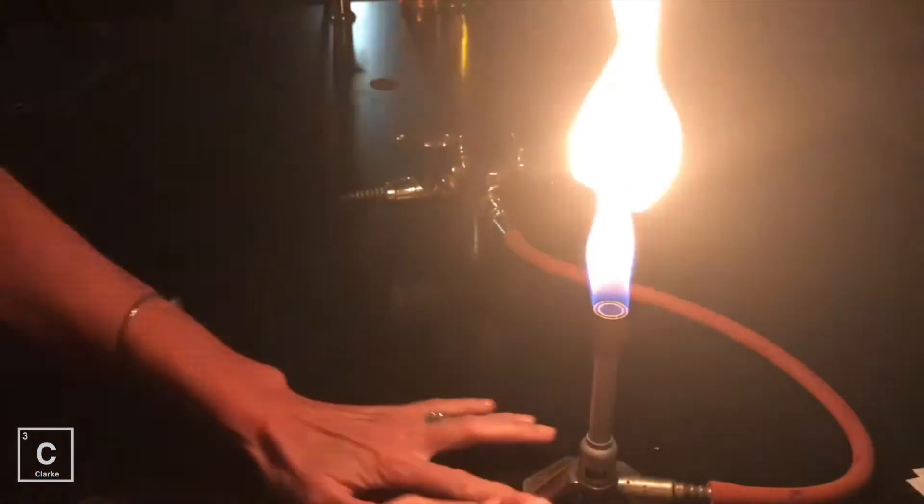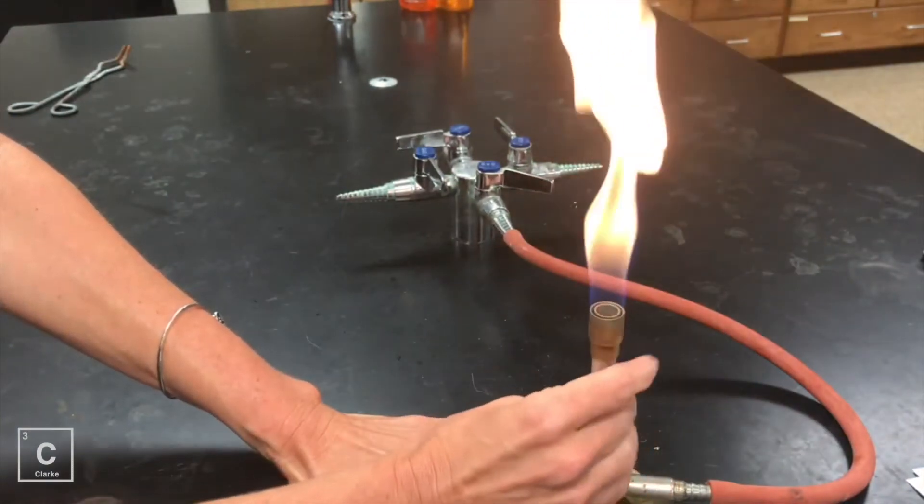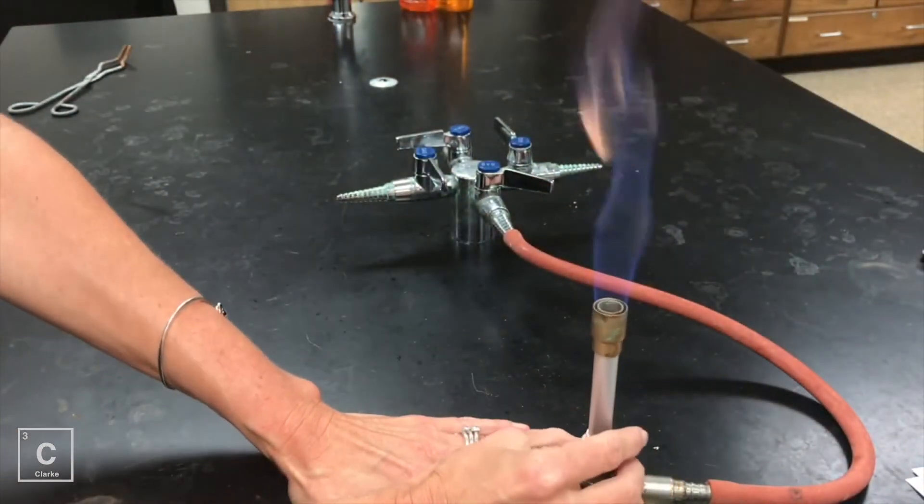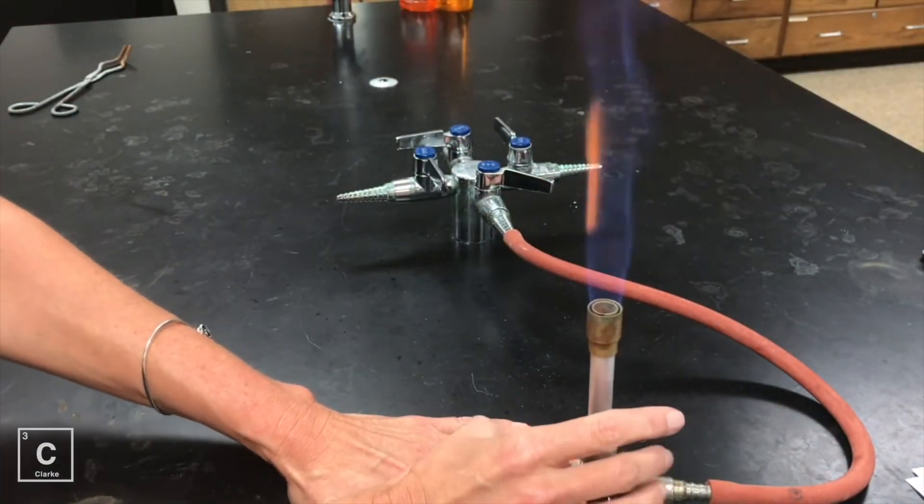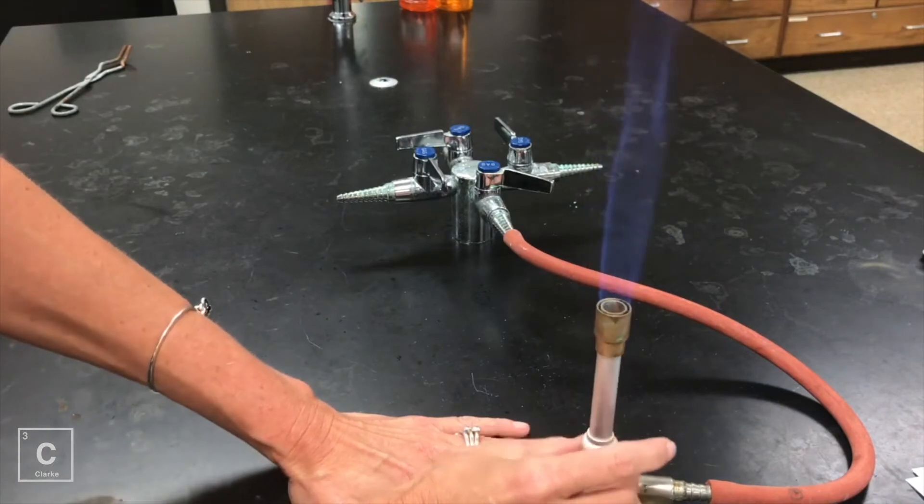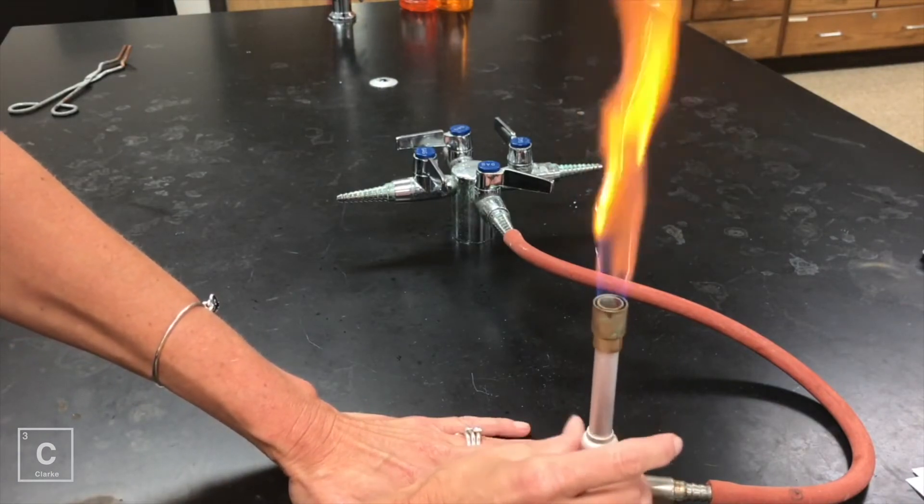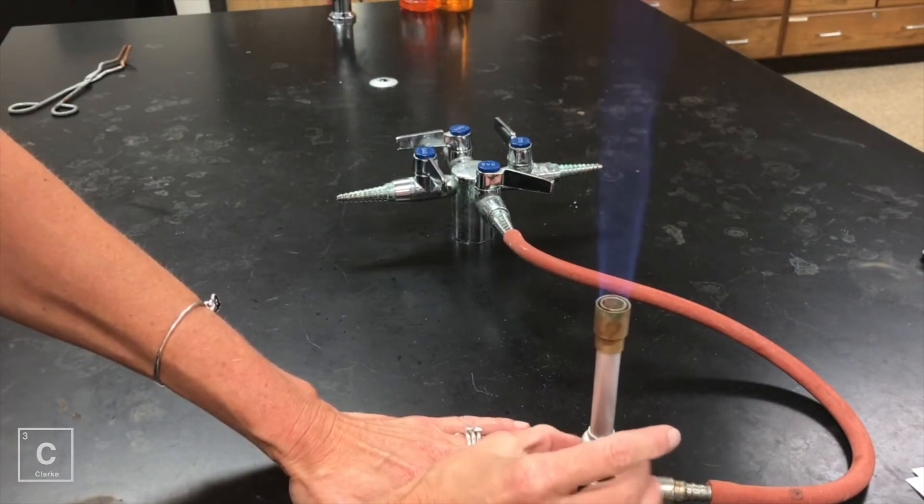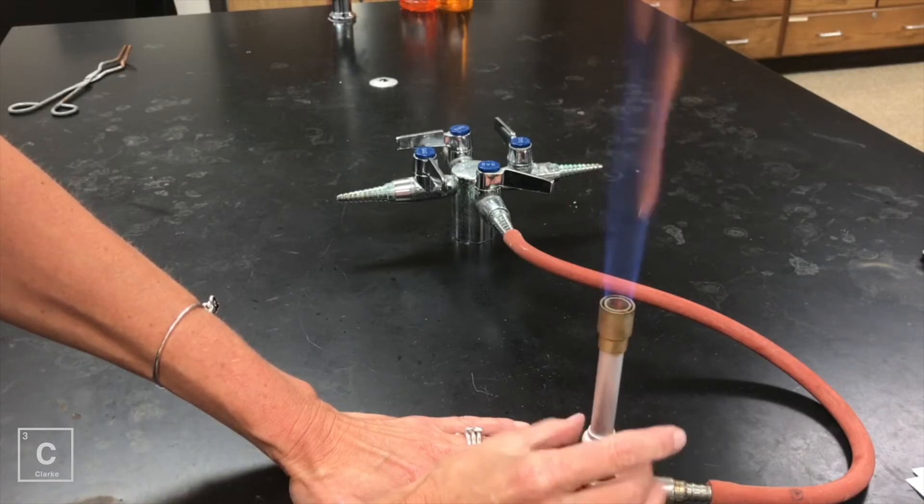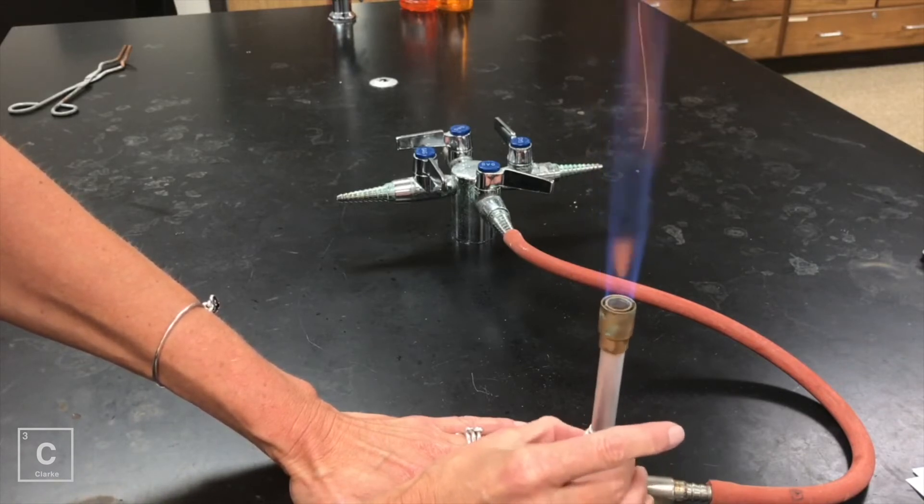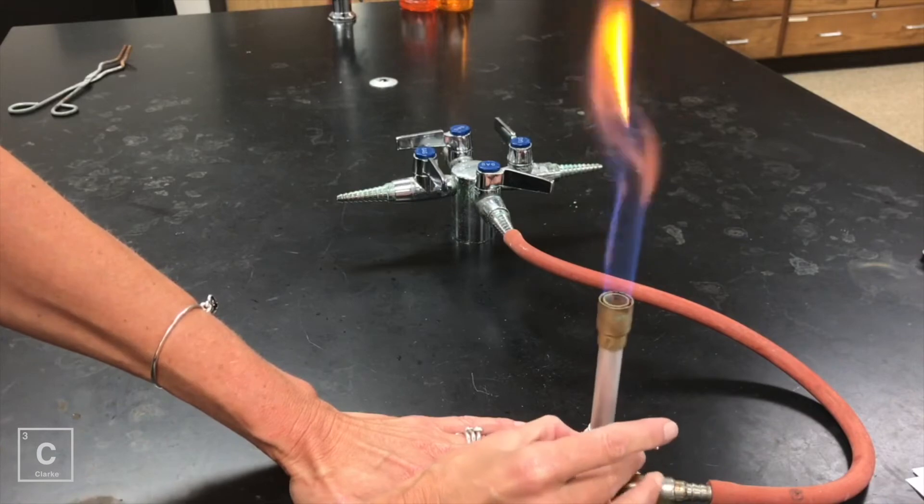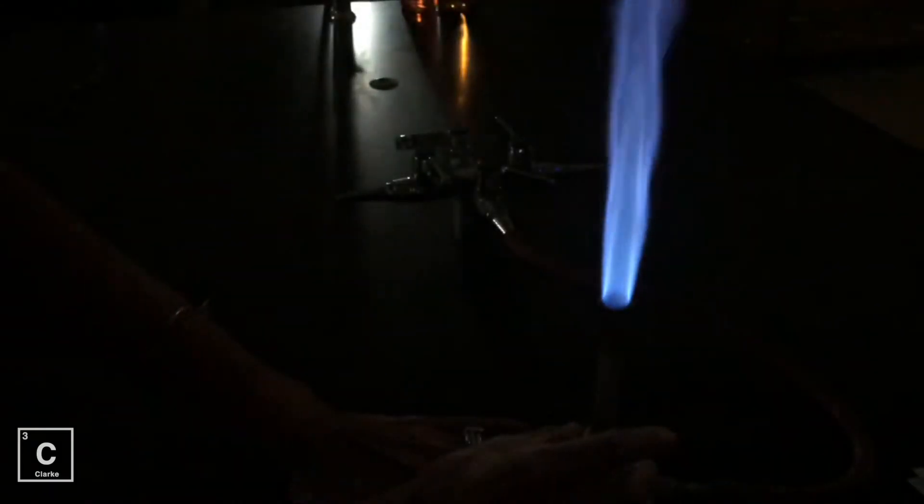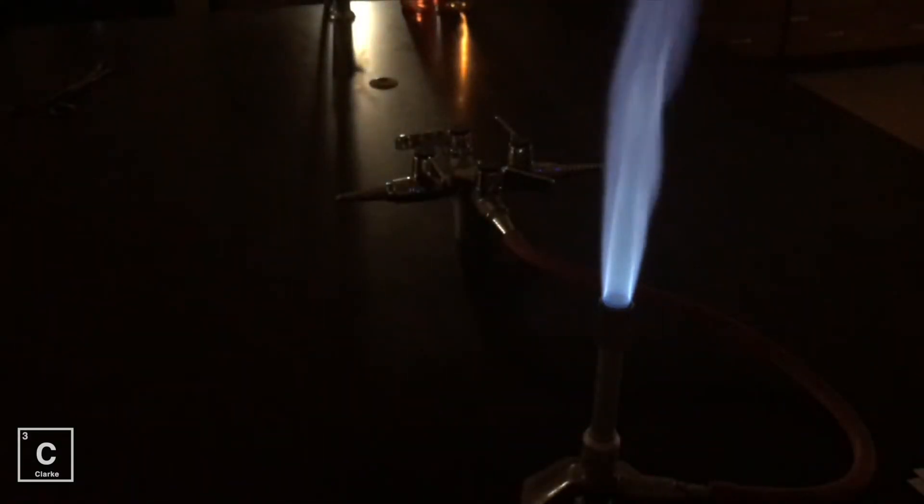So now let me open the vent some more. As I'm twisting you might even hear the flames start to make different sounds as oxygen is entering into the air valve. And then I've opened my valve until I get this roaring blue flame where I can clearly see an inner cone and an outer cone.